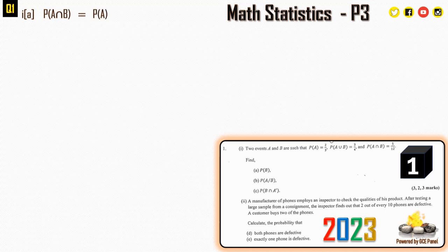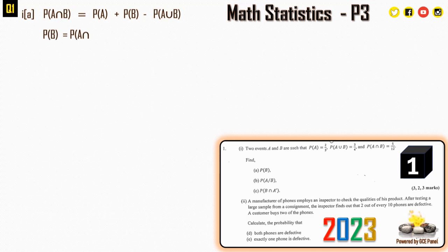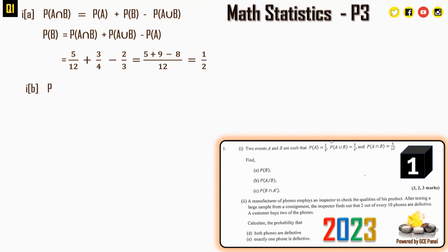To find the probability of B, we use the addition law: P(A ∩ B) = P(A) + P(B) − P(A ∪ B). Rearranging, P(B) = P(A ∩ B) + P(A ∪ B) − P(A) = 5/12 + 3/4 − 2/3 = 1/2.